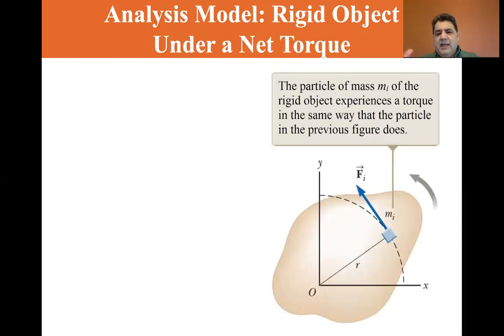Okay. So if we look at an object that's rotating, a solid object, if we look at all the particular parts of mass, let's read the box here. The particle of mass MI of the rigid object experiences torque in the same way that the particle in the previous figure does. So the force for the I object equals mass of the I object times its acceleration.